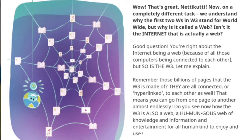We understand why the first two Ws in W3 stand for Worldwide, but why is it called a web? Isn't it the Internet that is actually a web? Good question. You are right about the Internet being a web because of all those computers being connected to each other — but so is the W3. Remember those billions of pages that the W3 is made of? They are all connected, or hyperlinked, to each other as well, meaning you can go from one page to another almost endlessly. That is how the W3 is also a web — a huge web of knowledge, information and entertainment for all humankind to enjoy and use.